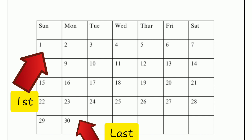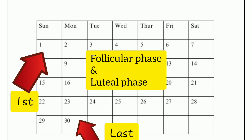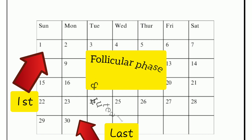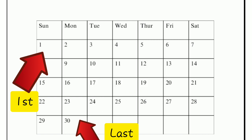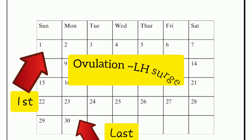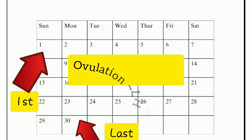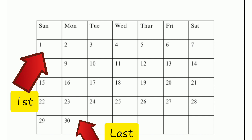Bear in mind that the menstrual cycle is made up of two phases: we have the follicular phase as well as the luteal phase. The follicular phase is characterized by the growth of follicles being released, and ovulation is usually characterized by what they call the luteinizing hormone surge.